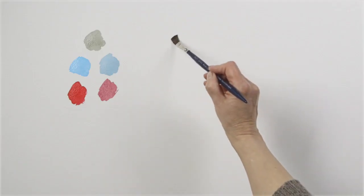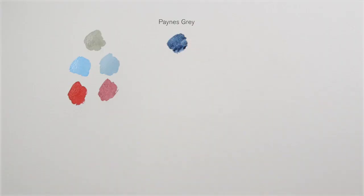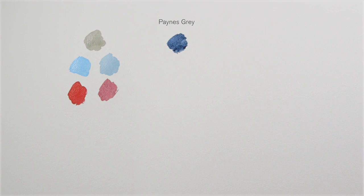This is Payne's Grey, a bluish grey named after William Payne who was the painter and printmaker who invented it. The first recorded naming of it was in 1835. It's a dark blue grey, less intense than black, so a really good addition to your palette in creating tones.